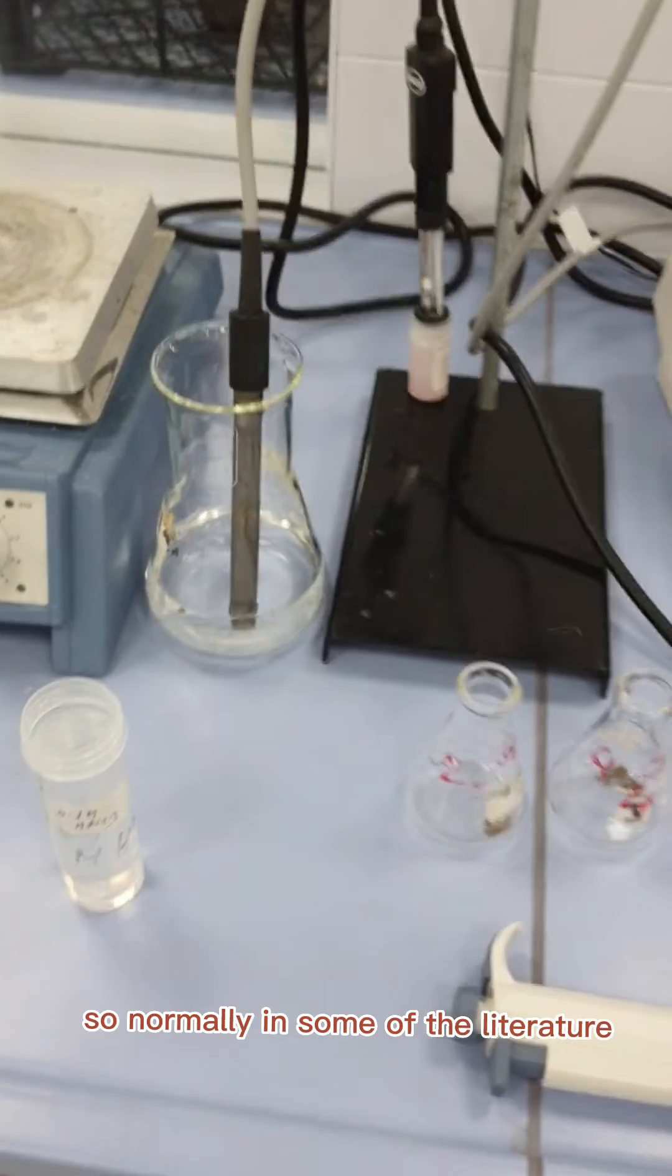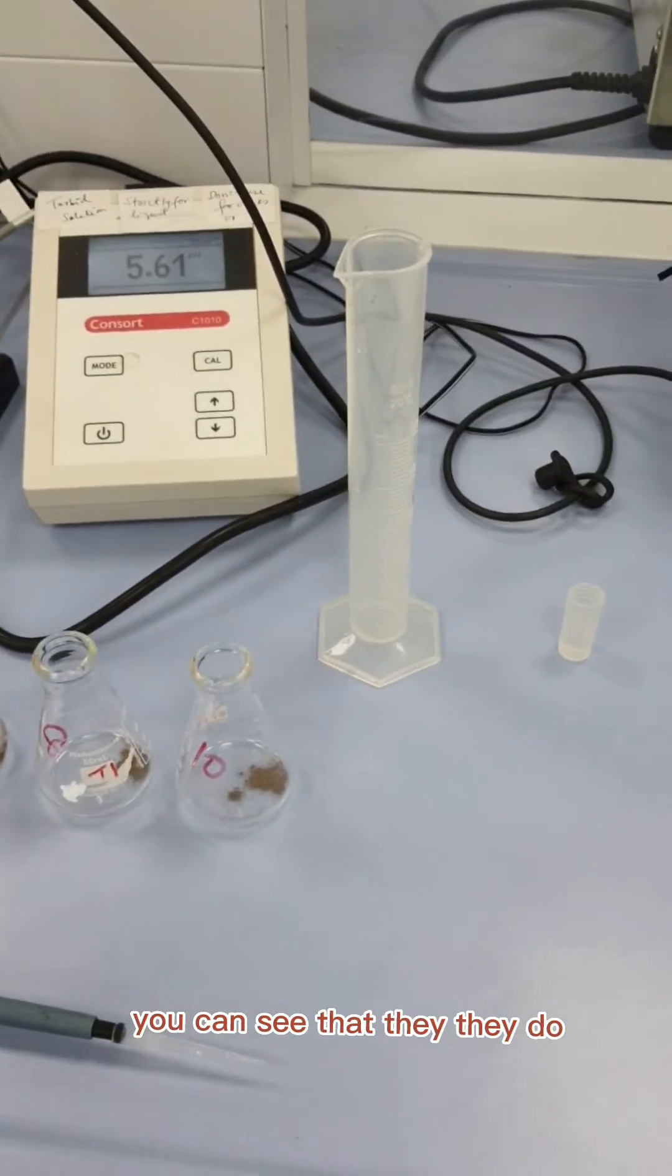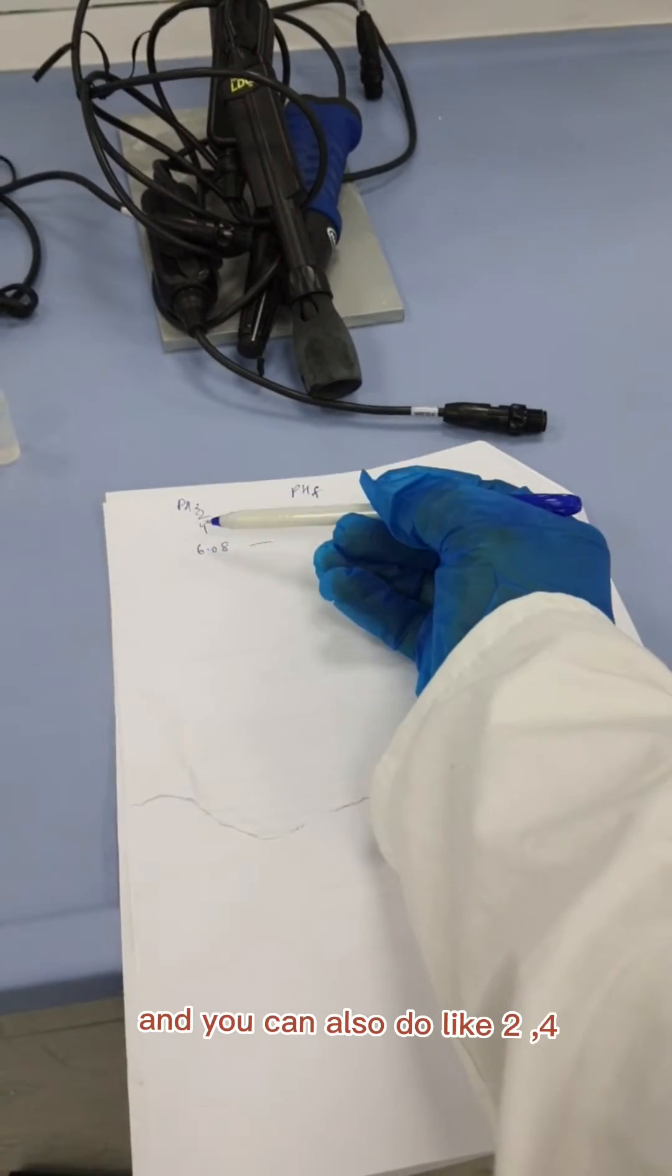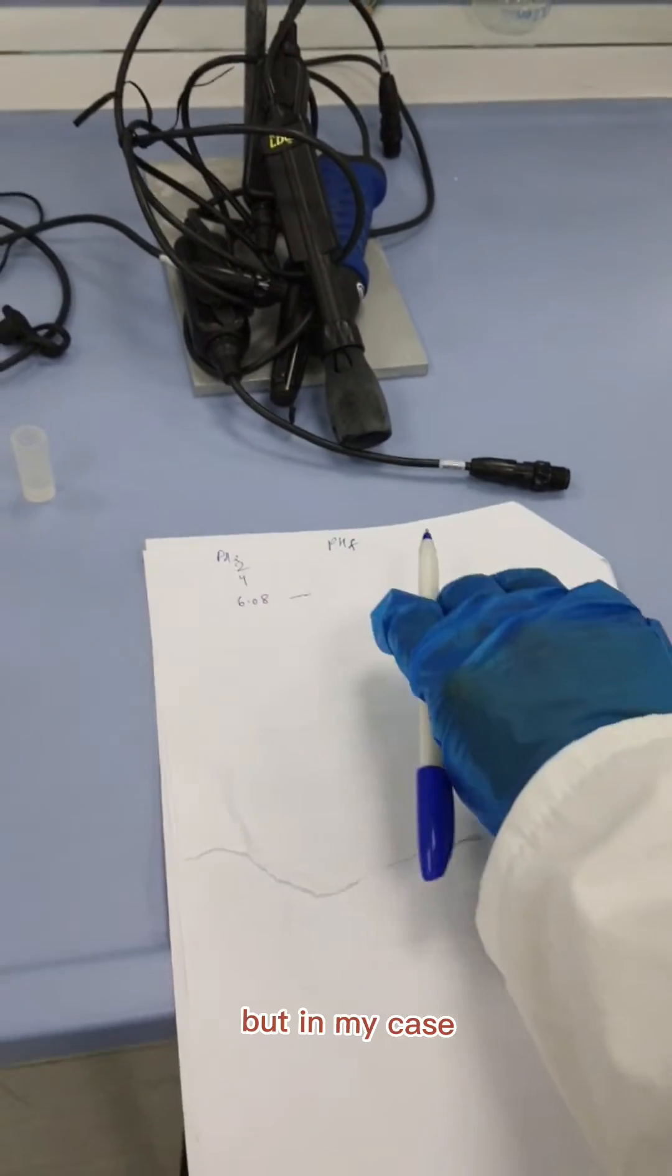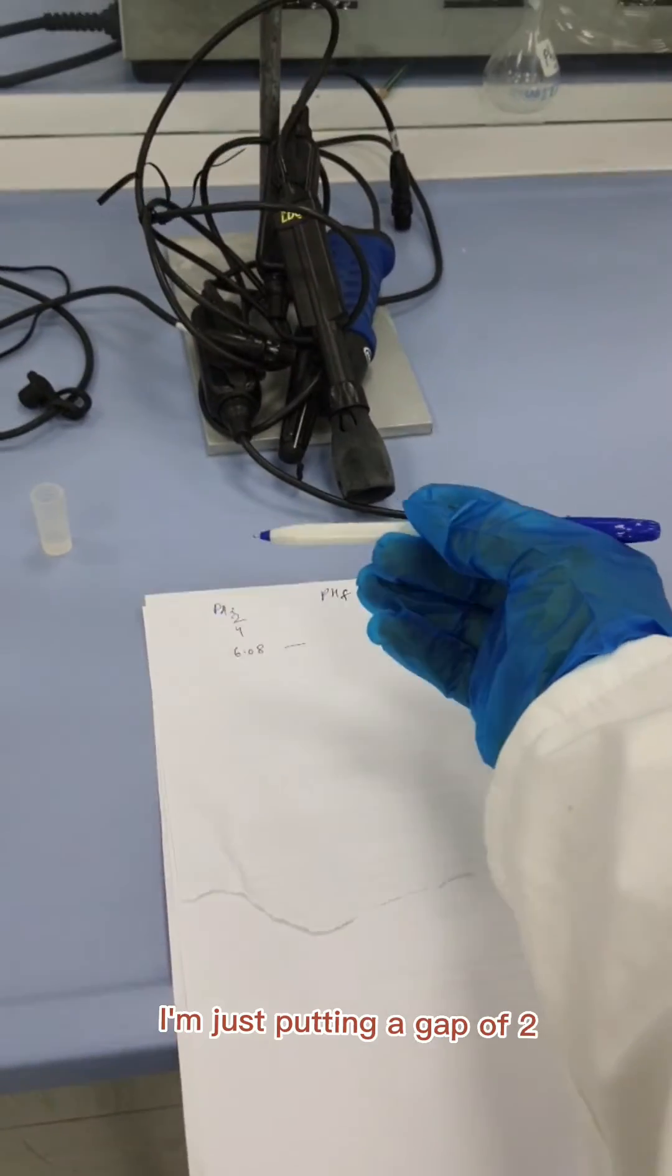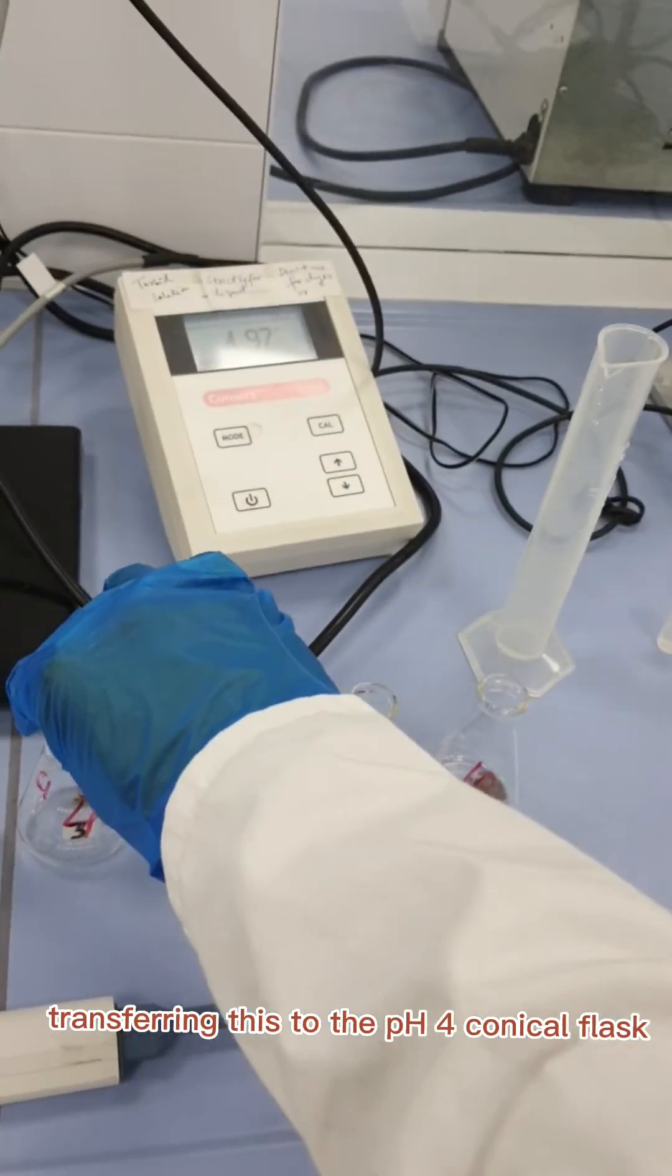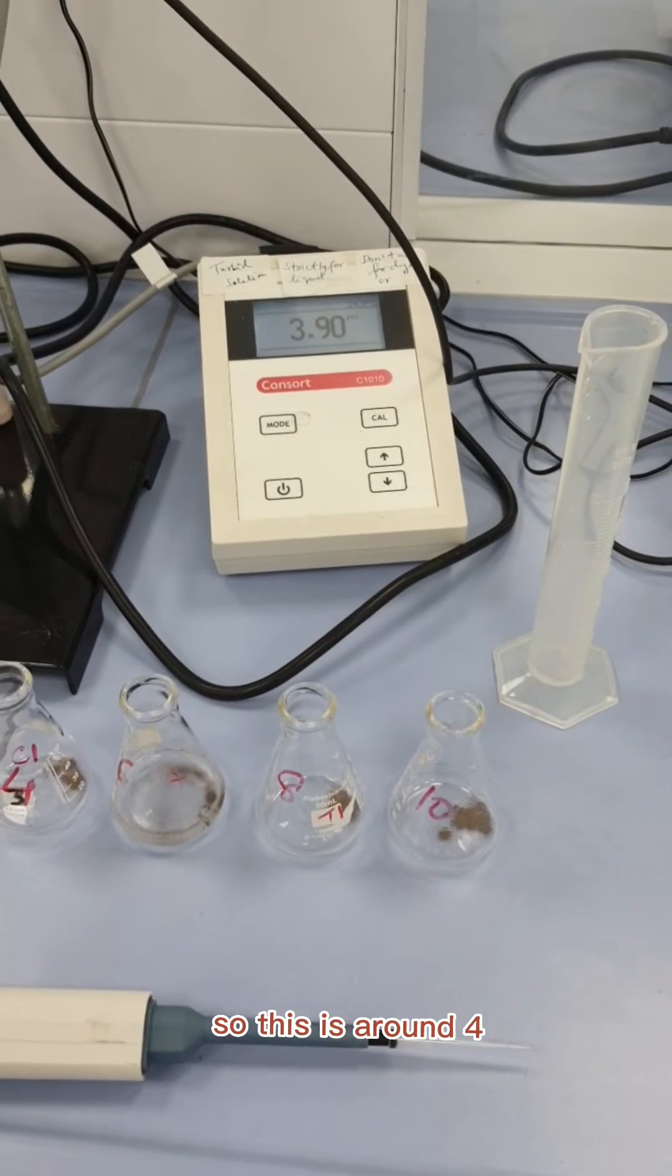Normally in some literatures or books you can see they maintain the pH like 2, 3, 4. You can also do like 2, 4, 6, 8, 10. But in my case I'm just putting a difference of 2. I'm just putting a gap of 2, transferring this to the pH 4 conical flask. So this is around 4.